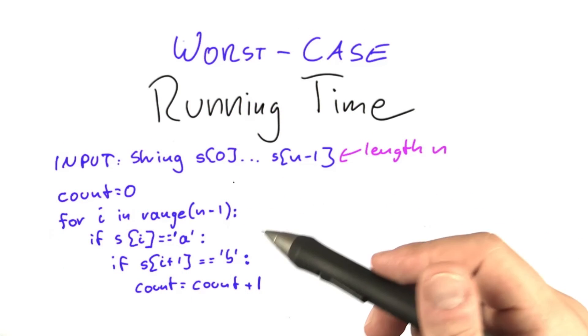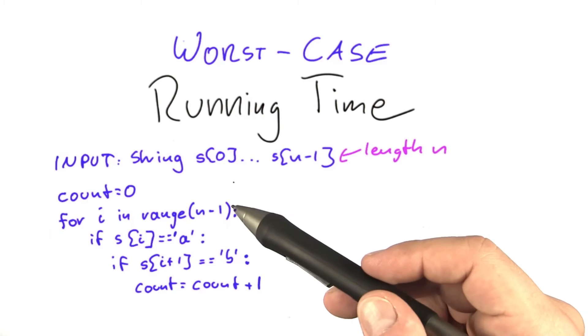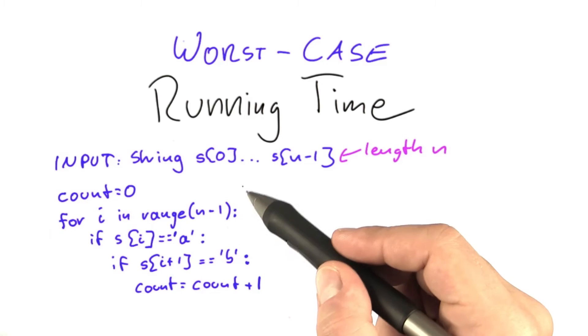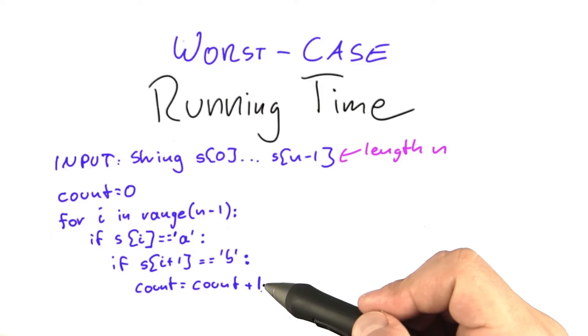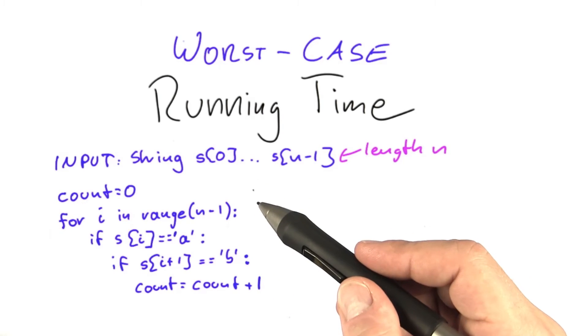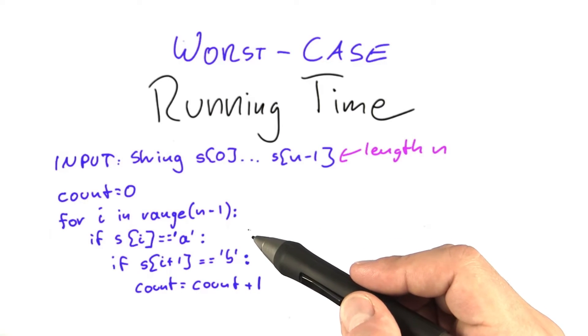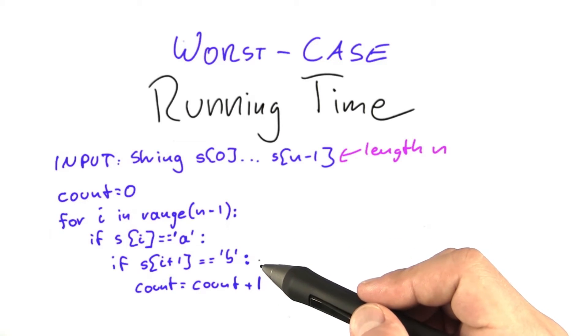So let's go back to the example from before where we tried to count the number of times that the sequence AB appears in a string of length n using this algorithm down here. And as you'll remember from the quiz, this was actually quite painful because we had to figure out what is a worst-case input and we noticed that this is actually not easy to figure out.